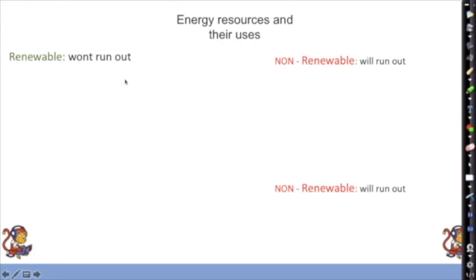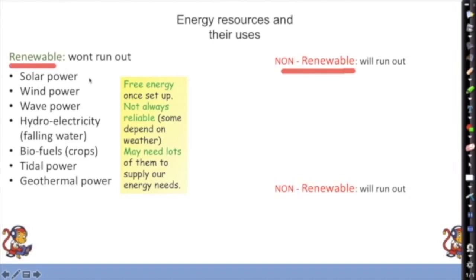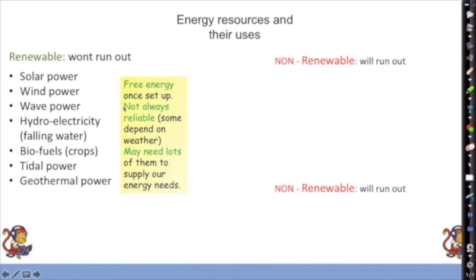Energy resources fall into two categories: renewable and non-renewable. Renewable means it won't run out; non-renewable will run out. Renewables include hydroelectric (falling water), biofuels (crops and biological material), tidal power, geothermal (hot rocks underground), wind, and solar. These are free once set up but aren't always reliable — wind and solar depend on weather — and we may need lots of them to meet our energy needs.